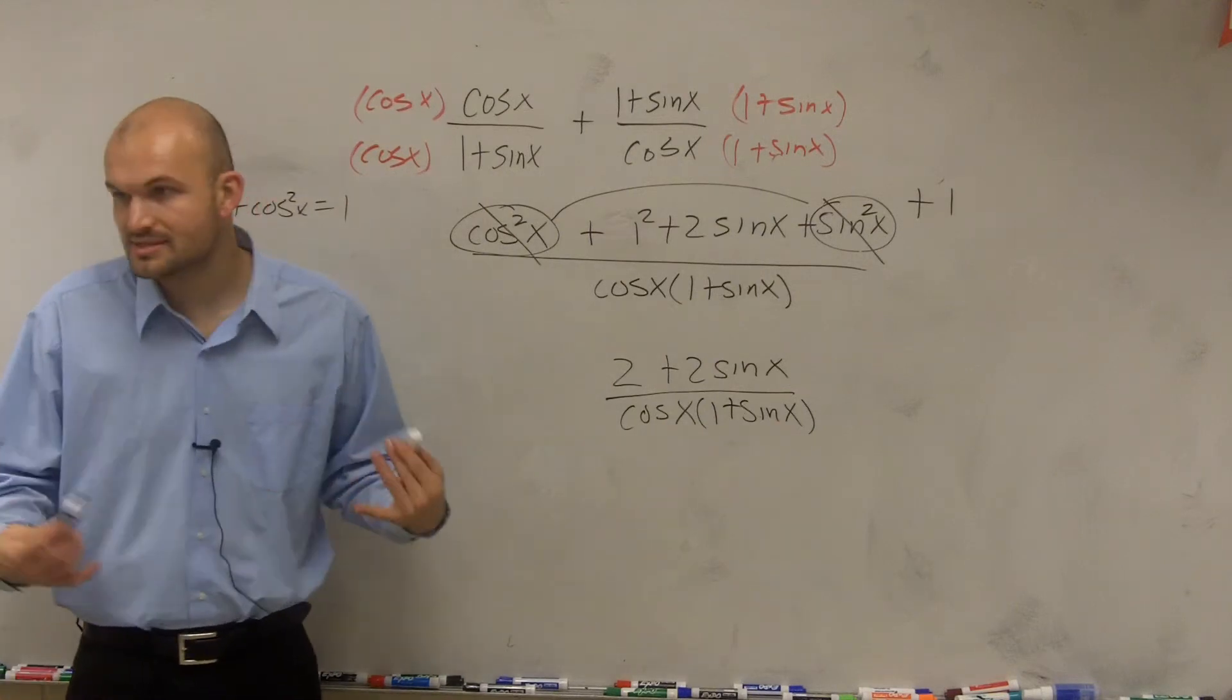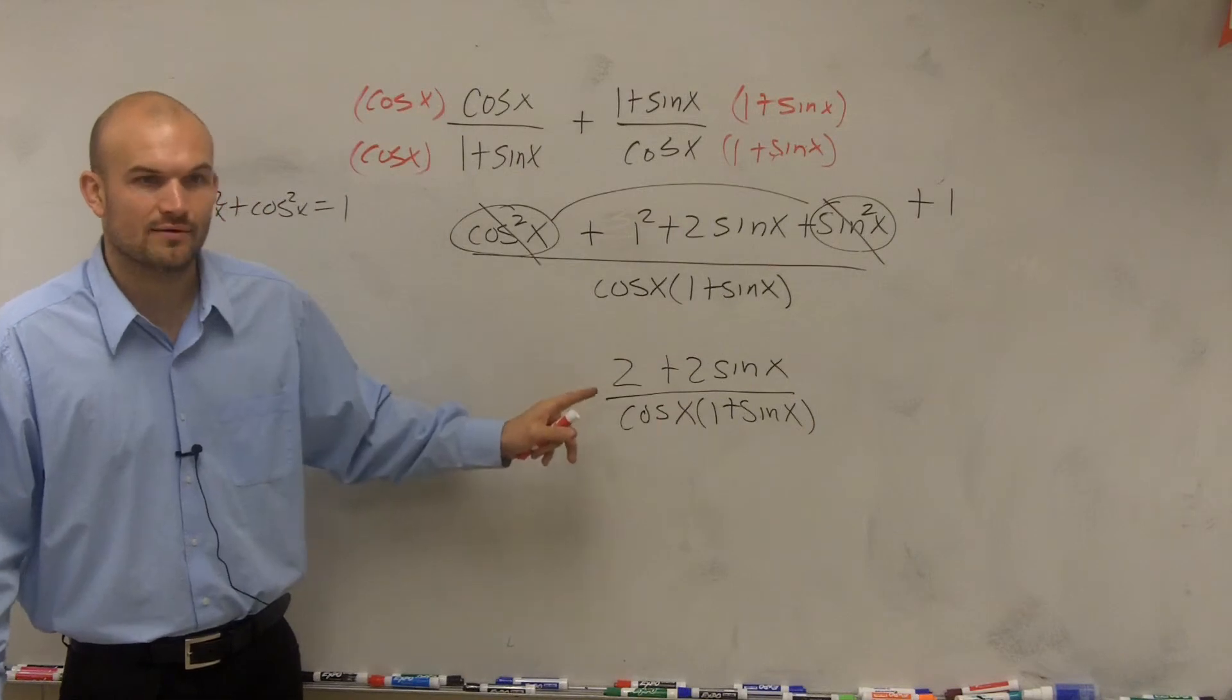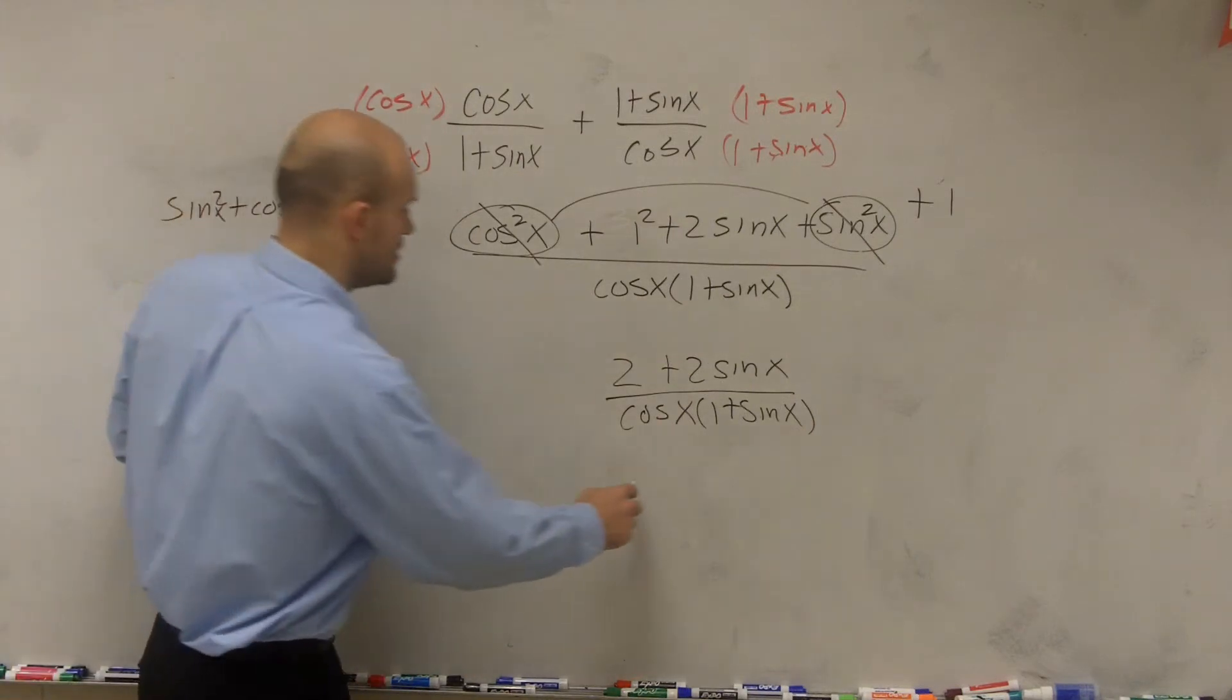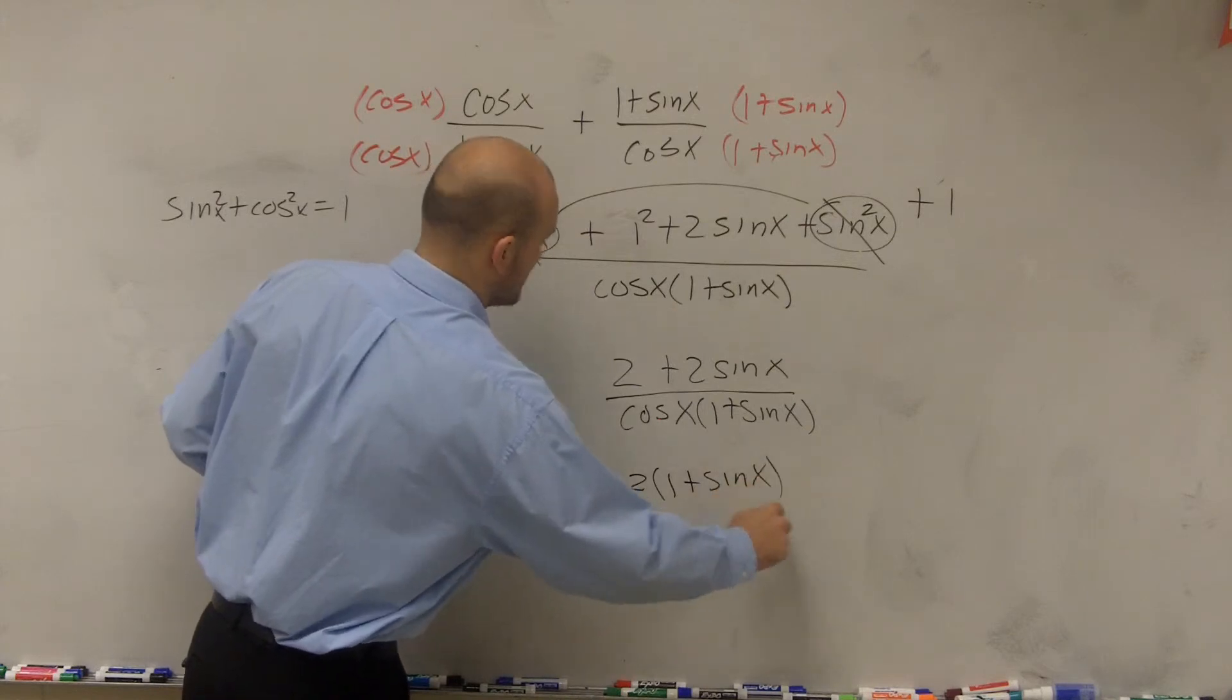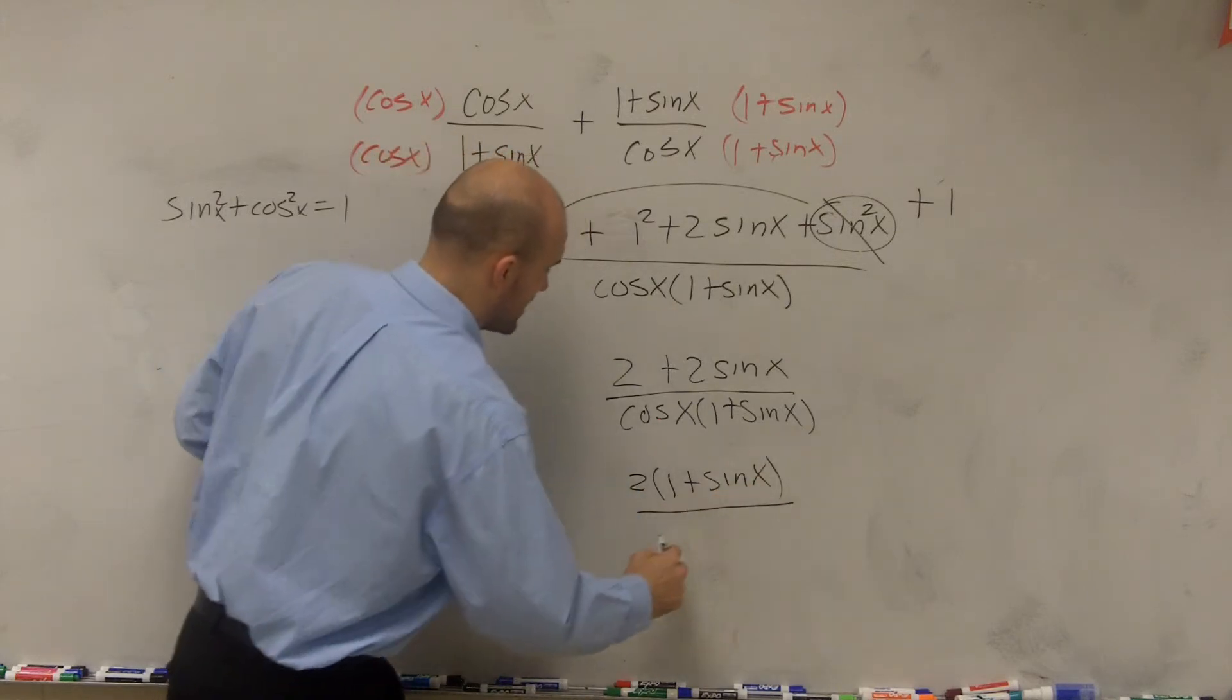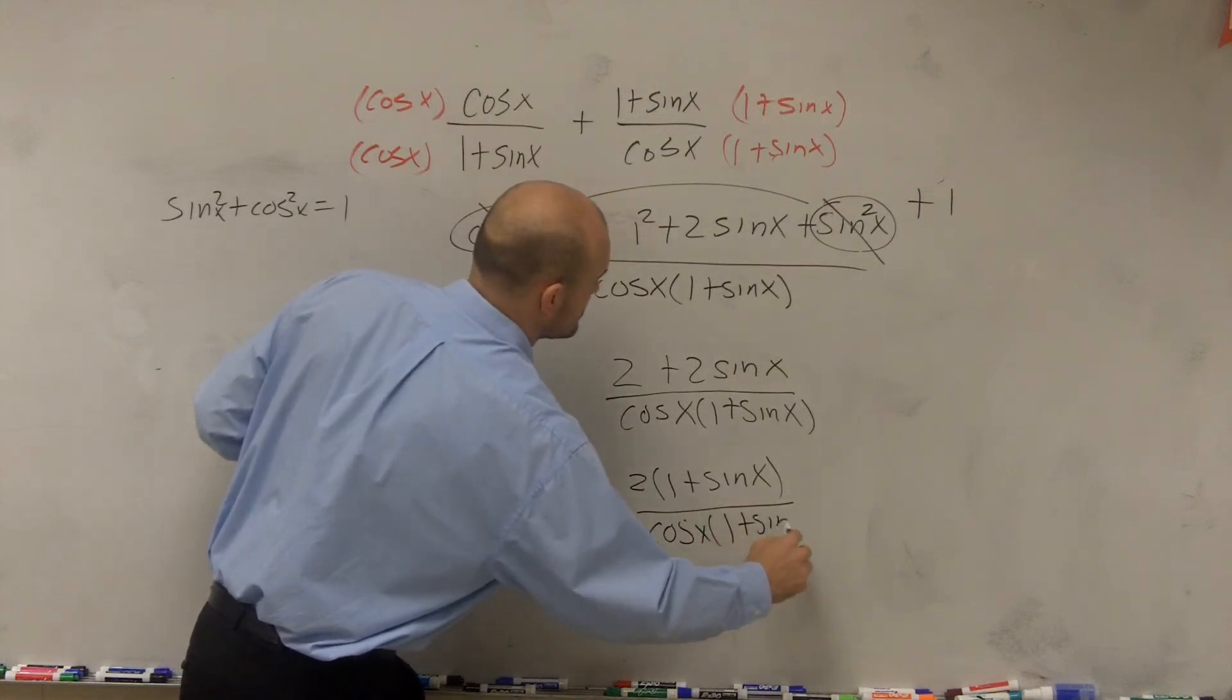And then thinking about the simplifying terms, I can see, oh well, I can factor out a 2 on the top. So therefore, I have 2 times 1 plus sine of x divided by cosine of x times 1 plus sine of x.